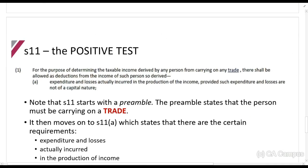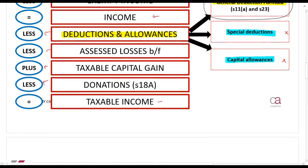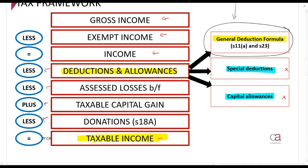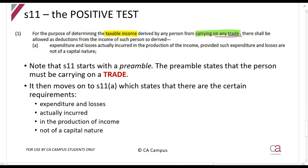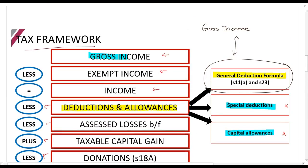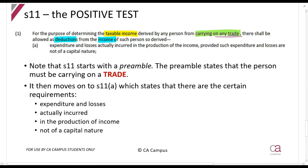Looking at the positive test in section 11a, it says: for the purpose of determining the taxable income derived by any person from carrying on any trade — so this applies within our tax framework calculation. They shall be allowed as deductions from the income of such a person — and income means gross income less exempt income, per the definition in section 1. You can deduct any expenditure and losses actually incurred in the production of income, provided such expenditure and losses are not of a capital nature.